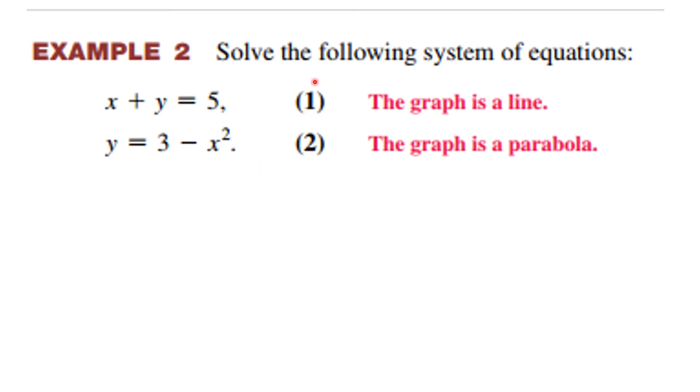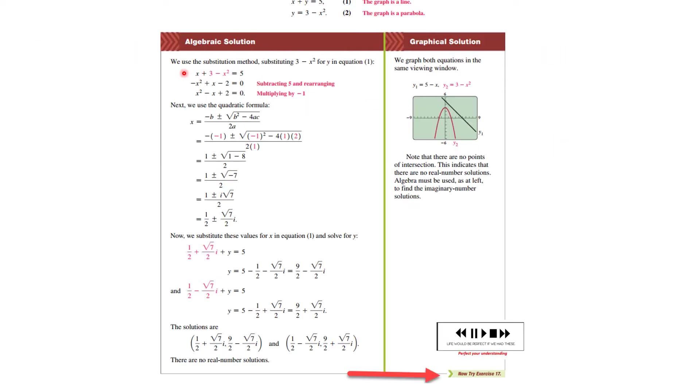Here's another example. The first equation is a line, the second is a parabola. We'll use substitution, substituting the second equation into the first. We multiply both sides by -1 to make it easier. We use the quadratic formula and find the solutions are complex numbers. That means there are no real solutions, so we won't find an intersection when we graph these. The x-axis and y-axis represent real numbers; they don't intersect. You may want to try this example.